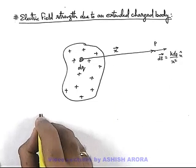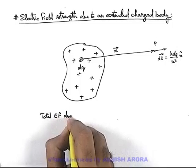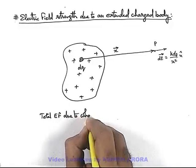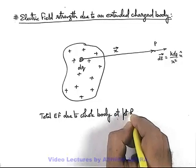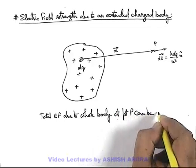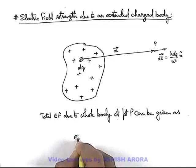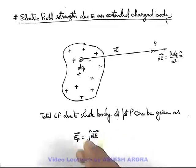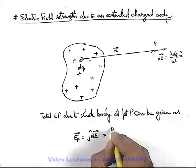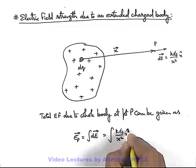Then, total electric field or net electric field due to whole body at point P can be given as: EP vector equals integration of the electric field vector due to an elemental charge. So this can be integrated as k dq by x square x cap, within the limits of this whole body.